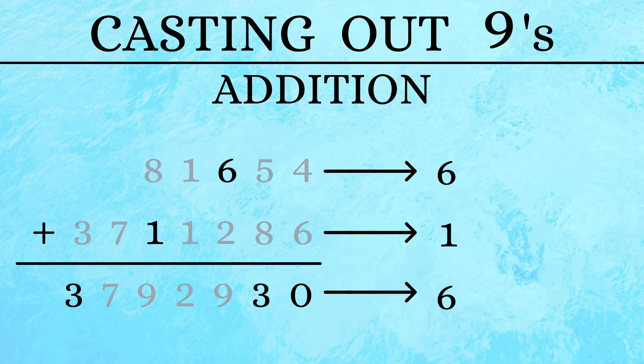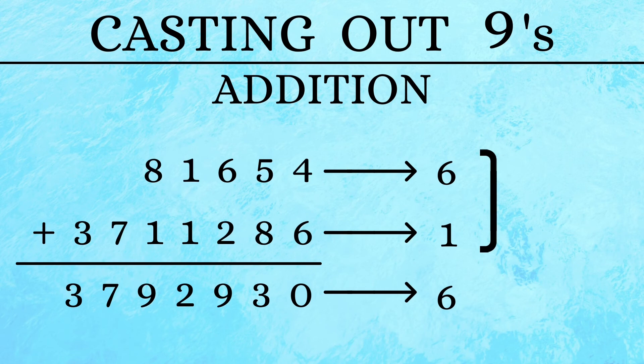Then we add up 6 and 1 to get a 7, which is clearly different from our answer, which shows again that our answer is incorrect.